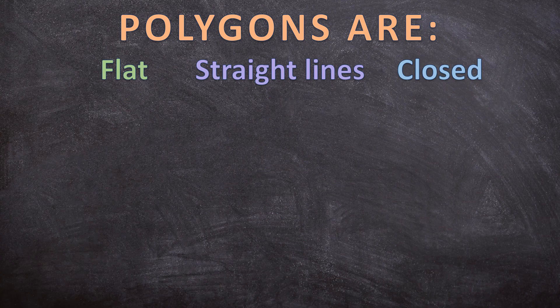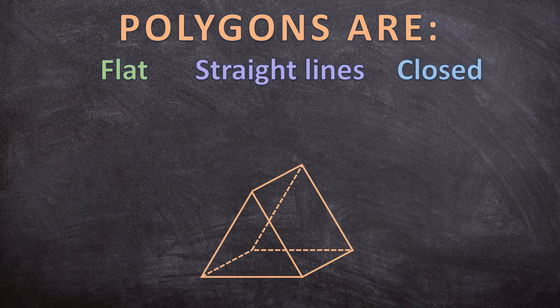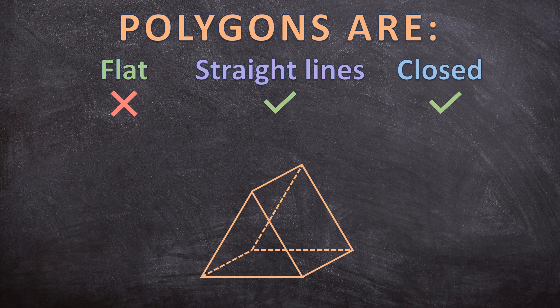Let's look at our next shape. Does this shape only consist out of straight lines? Yes, it does. Is it a closed shape? Yes, it is closed. But is it a flat shape? No — this is a three-dimensional shape. So this is not a polygon.